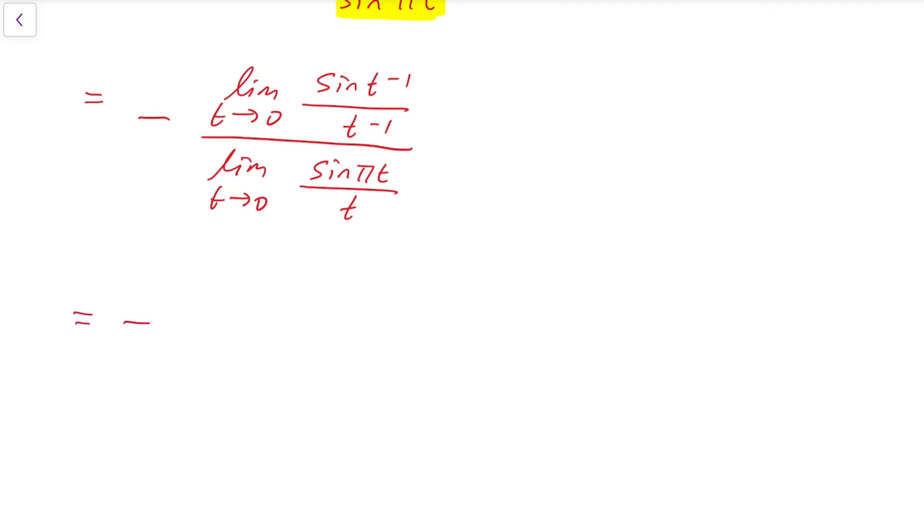Now for the numerator, we can actually make another substitution, which is by letting u equals t⁻¹. So when t approaches 0, actually we have u to be approaching infinity. Then we will have the limit of the function sin(u) all divided by u when u tends to infinity.